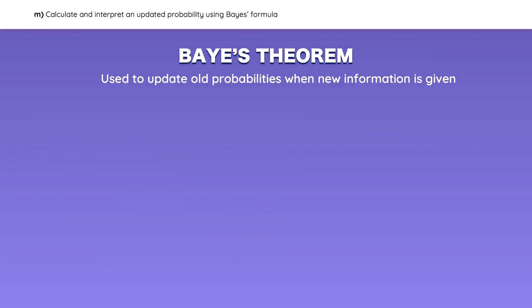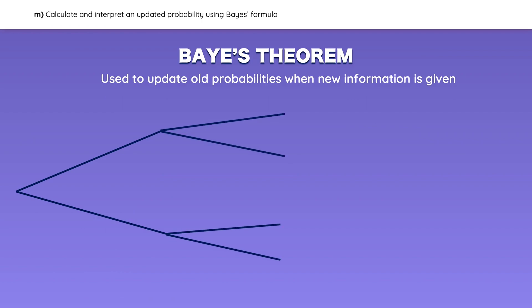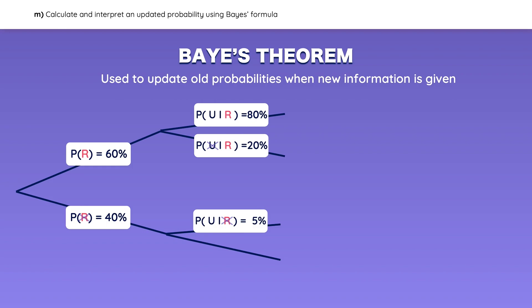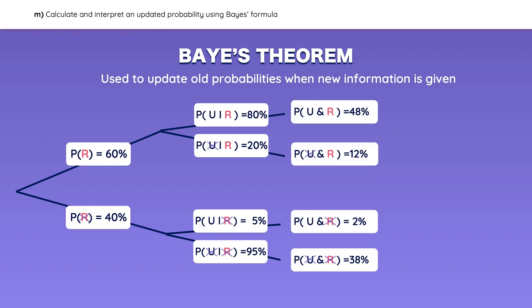The next learning outcome covers Bayes' theorem, which is used to update old probabilities when new information is given. We highly recommend drawing a tree diagram with the given information to avoid making mistakes. Here we have the probability that it rains and the probability of no rain. The probability that someone brings an umbrella given that it rained is 80%, and not bringing one given that it rained is 20%. The chance of bringing an umbrella given no rain is 5%, and not bringing one is 95%. To get the joint probabilities, multiply across each branch.